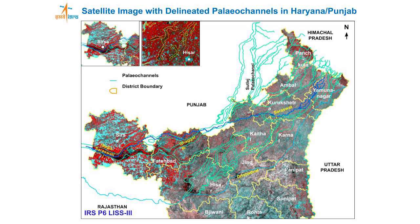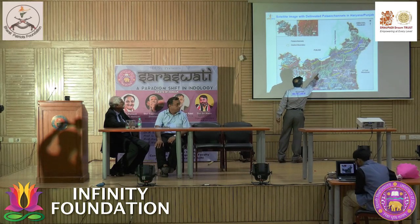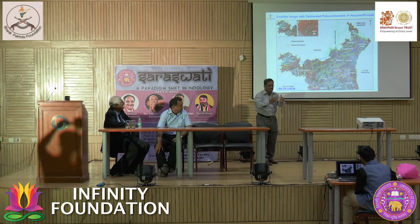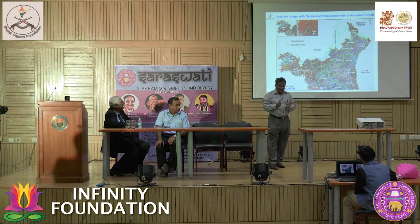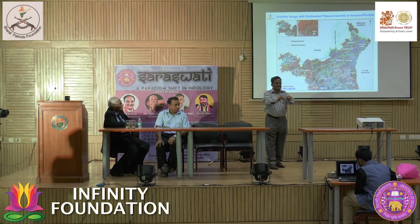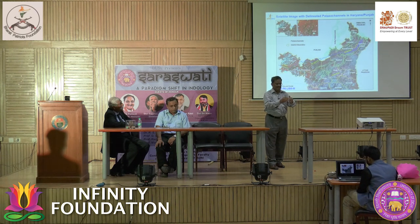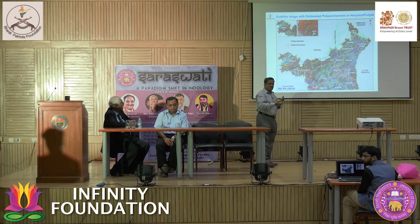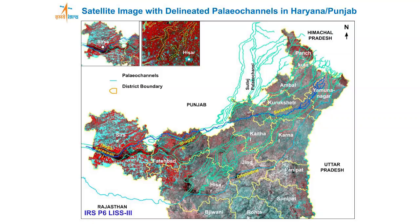From 2005 onwards we started this work in Haryana and part of Punjab. There is a very interesting finding — you can see different colors representing different channels which are anastomosing. If you go to the Ganga river, this is the width of the river but in between you have sand deposits with water coming from both sides — that is called anastomosing rivers. We can, by processing, pick up those paleo channels. We delineated channels in Haryana and, in the north just south of the Sutlej river, what is called the Sutlej paleochannel — that also we have delineated using satellite images.